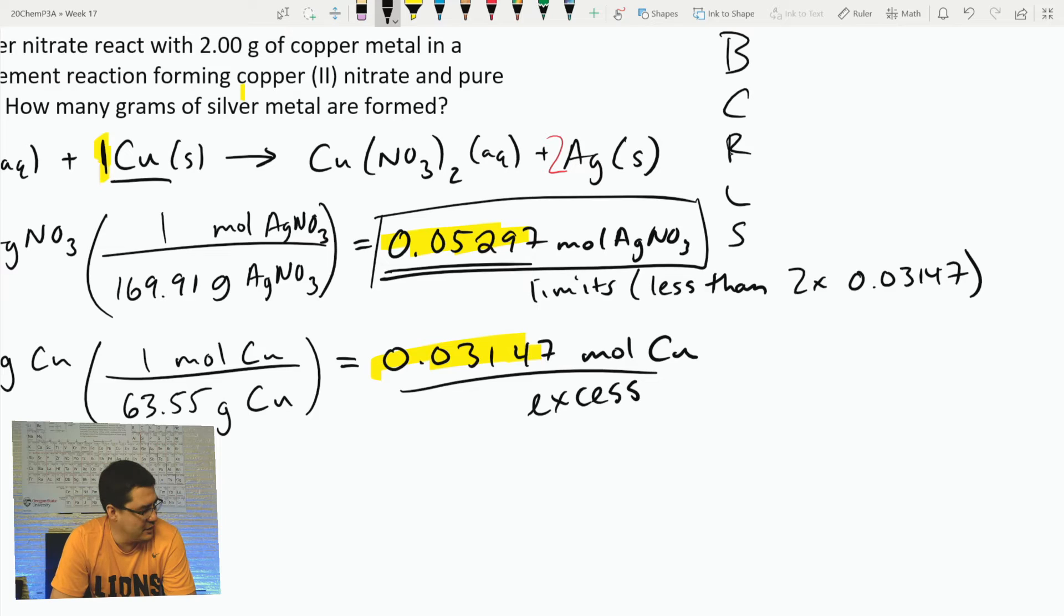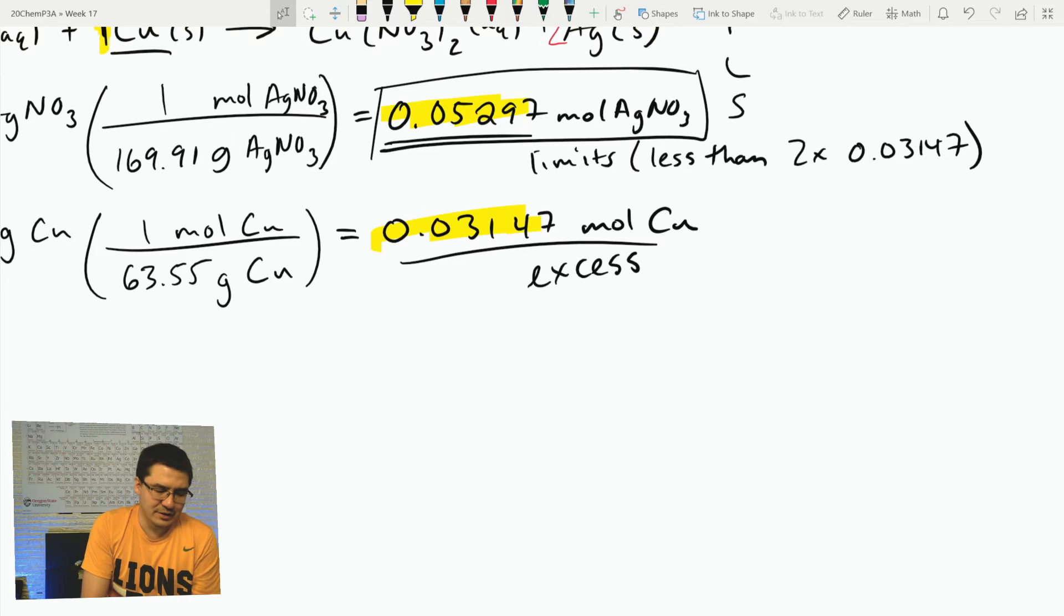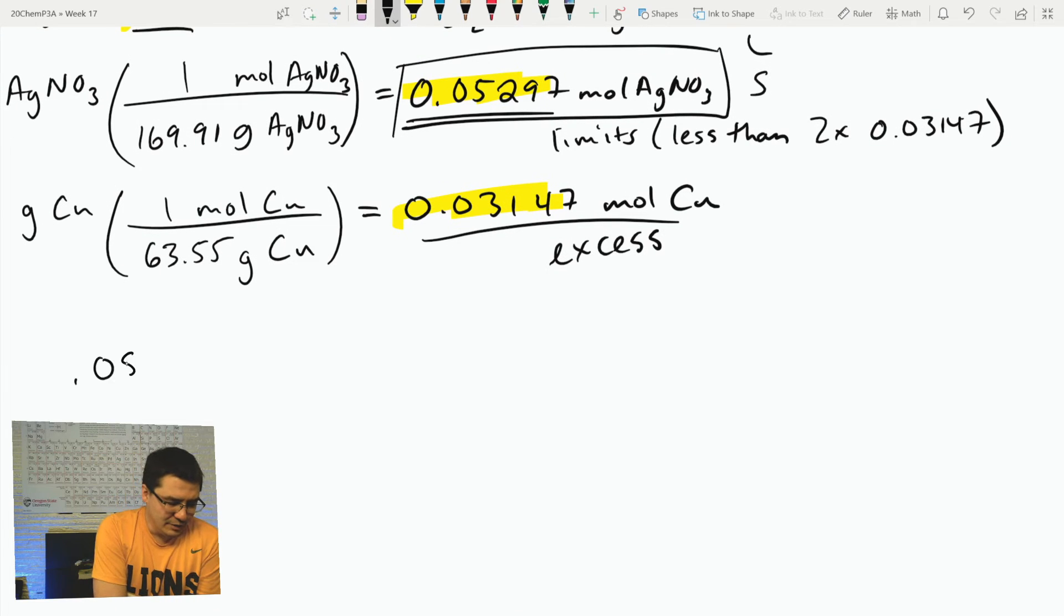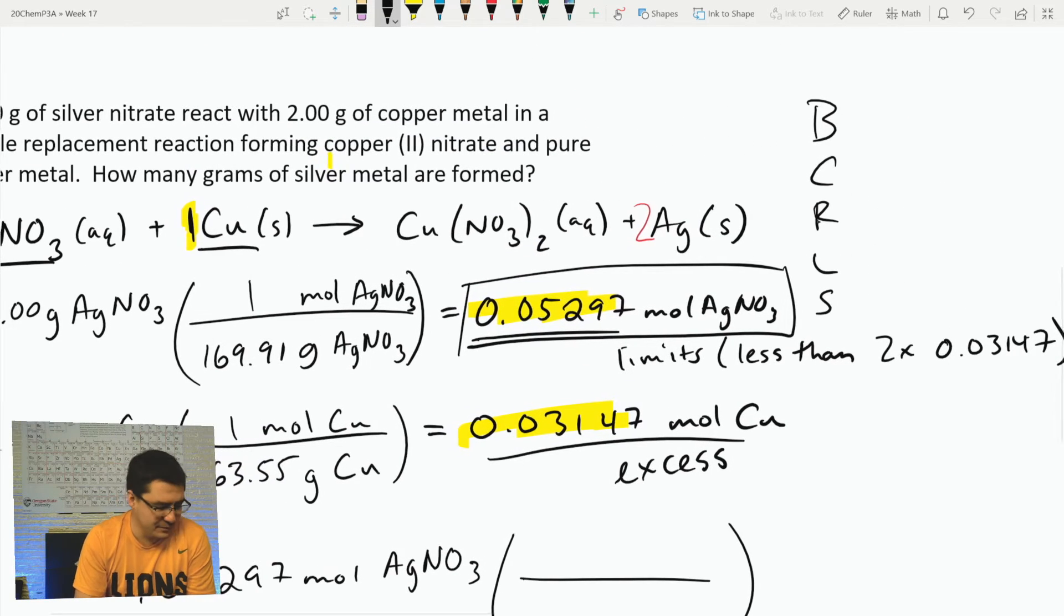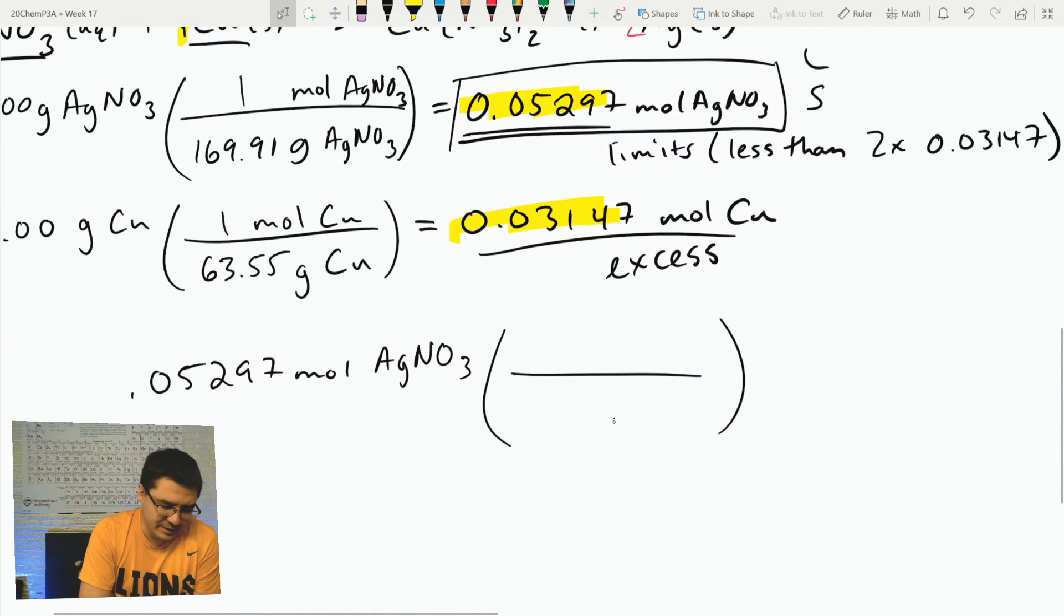We've now checked the ratio, identified the L in CURLS - the limiting reactant - and so now we're going to Solve. To solve, I start with the limiting reactant: 0.05297 moles AgNO3. I need to convert. My question was asking me how many grams of silver metal are formed, so I want to convert from moles AgNO3 to moles Ag.